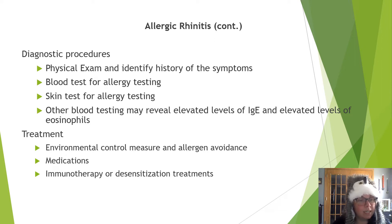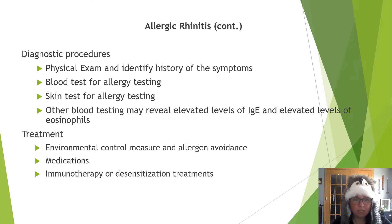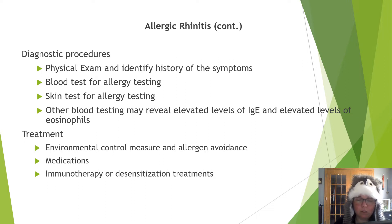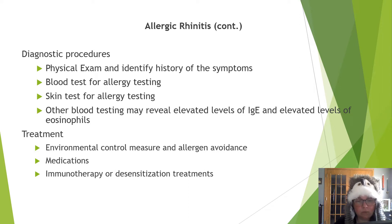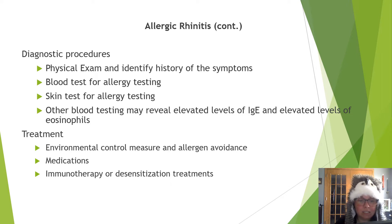Allergic rhinitis is diagnosed with a physical exam and a history of symptoms. Blood tests and allergy skin prick tests can locate the offender. Other blood tests may reveal elevated levels of IgE, and a blood smear or count could show elevated eosinophils — a type of blood cell that activates during allergic reactions. Environmental control and avoiding allergens is the main treatment route. If avoidance is not an option, there are medications and immunotherapy desensitization treatments available.